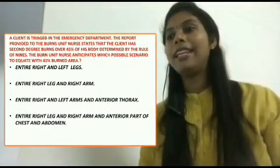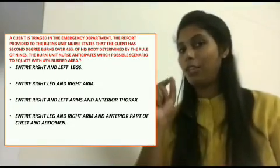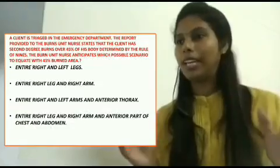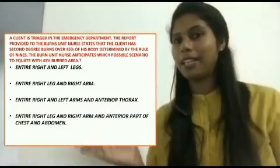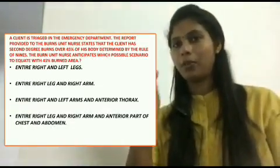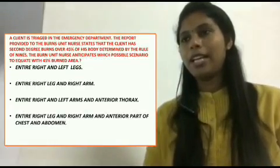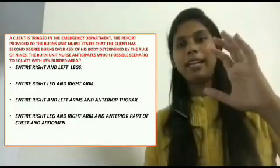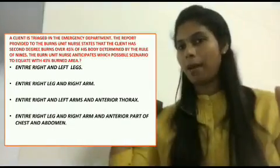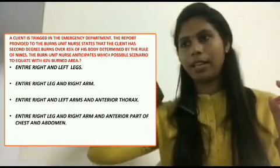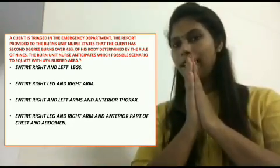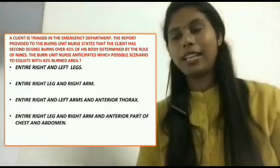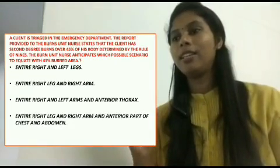The first option is entire right and left legs. One leg is 18 percent, so both legs total 36 percent. This does not match 45 percent, so we can eliminate this option. The second option is entire right leg and right arm. The right leg is 18 percent and the right arm is 9 percent, giving 27 percent. That also does not match 45 percent, so eliminate.